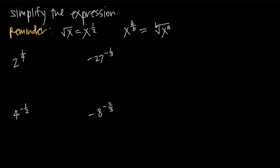In this video, we're talking about fractional exponents, and the most important thing to remember about fractional exponents is this formula here that tells you that the square root of x, or anything for that matter, is equal to x to the 1/2. So in other words, whenever you're taking the square root of something, this square root symbol becomes this 1/2 fraction, and the x stays the same. Taking the square root of x is the same thing as raising x to the 1/2 power.